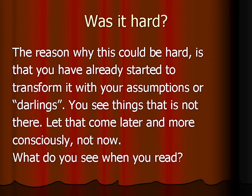This is the first part, and it could be a little bit hard. The reason is that maybe you have already started to transform it with your assumptions, or you have some kind of darlings that you see — things that are not there. So let's start thinking like a police officer when you are doing this. Let your assumptions or darlings come a little later and more consciously, not right now.